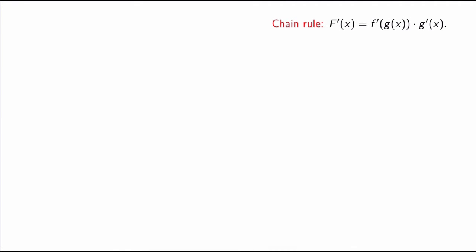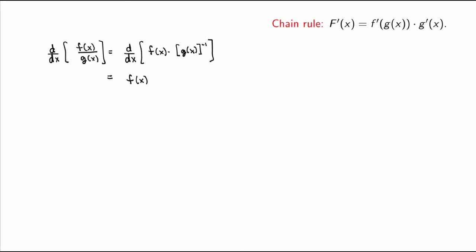Let me end this video by showing how you can get the quotient rule from the product rule and the chain rule. Suppose you're in an exam and you can't remember the quotient rule. To find the derivative of f(x)/g(x), rewrite it as f(x) · [g(x)]⁻¹ — the same expression but now as a product of two functions. Applying the product rule: f(x) · d/dx[g(x)⁻¹] + [g(x)]⁻¹ · f′(x).